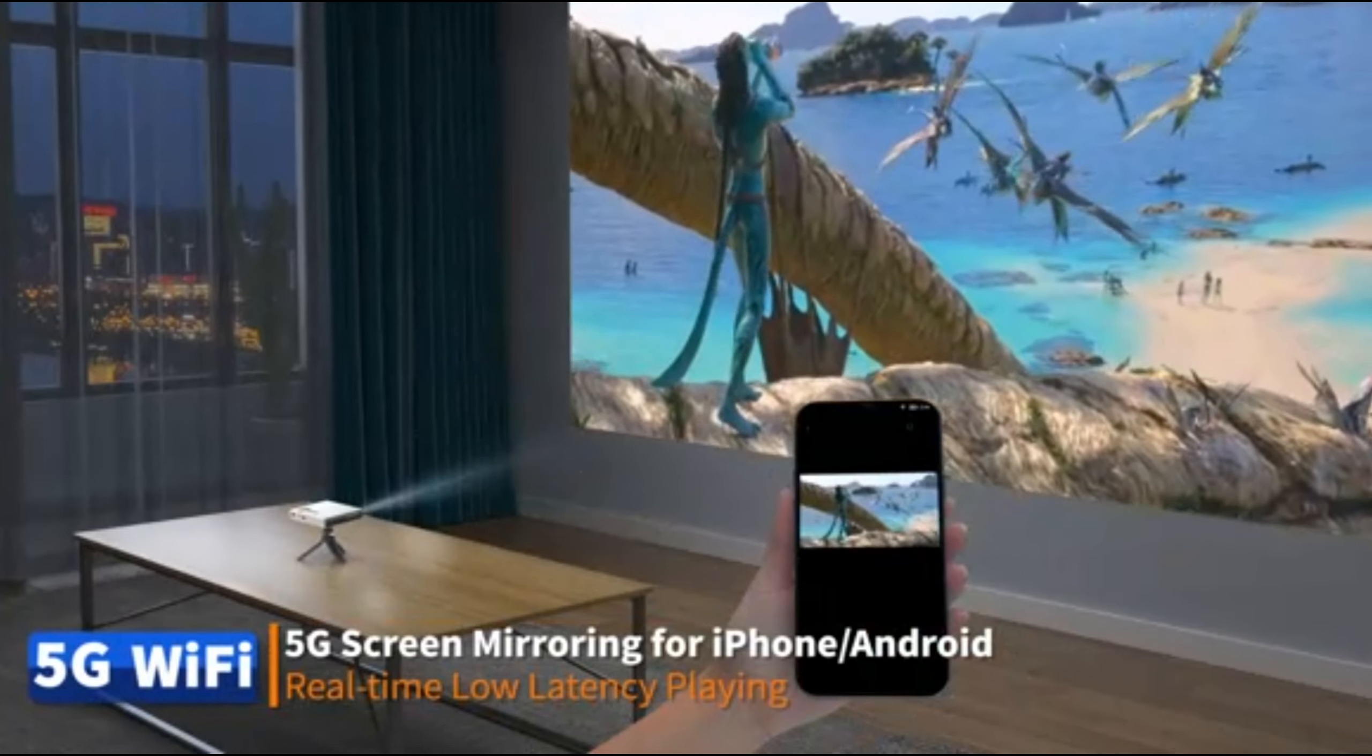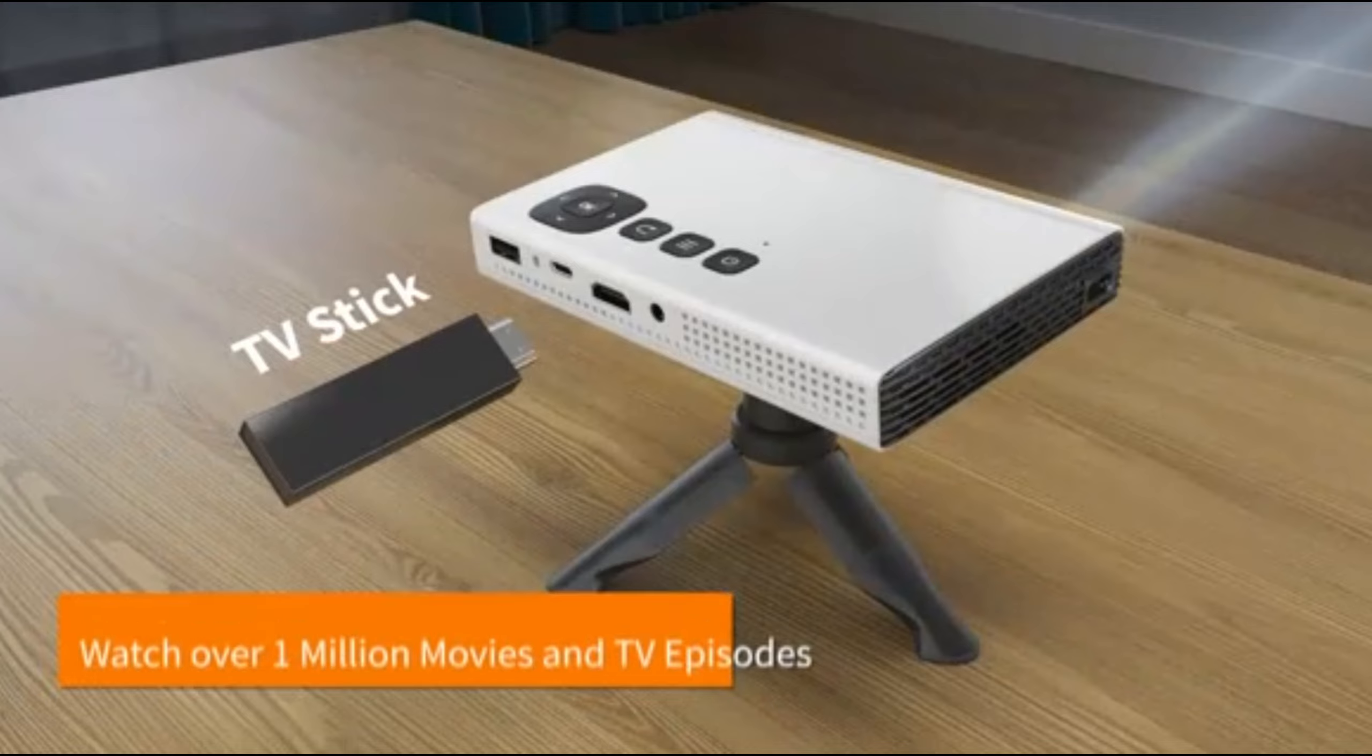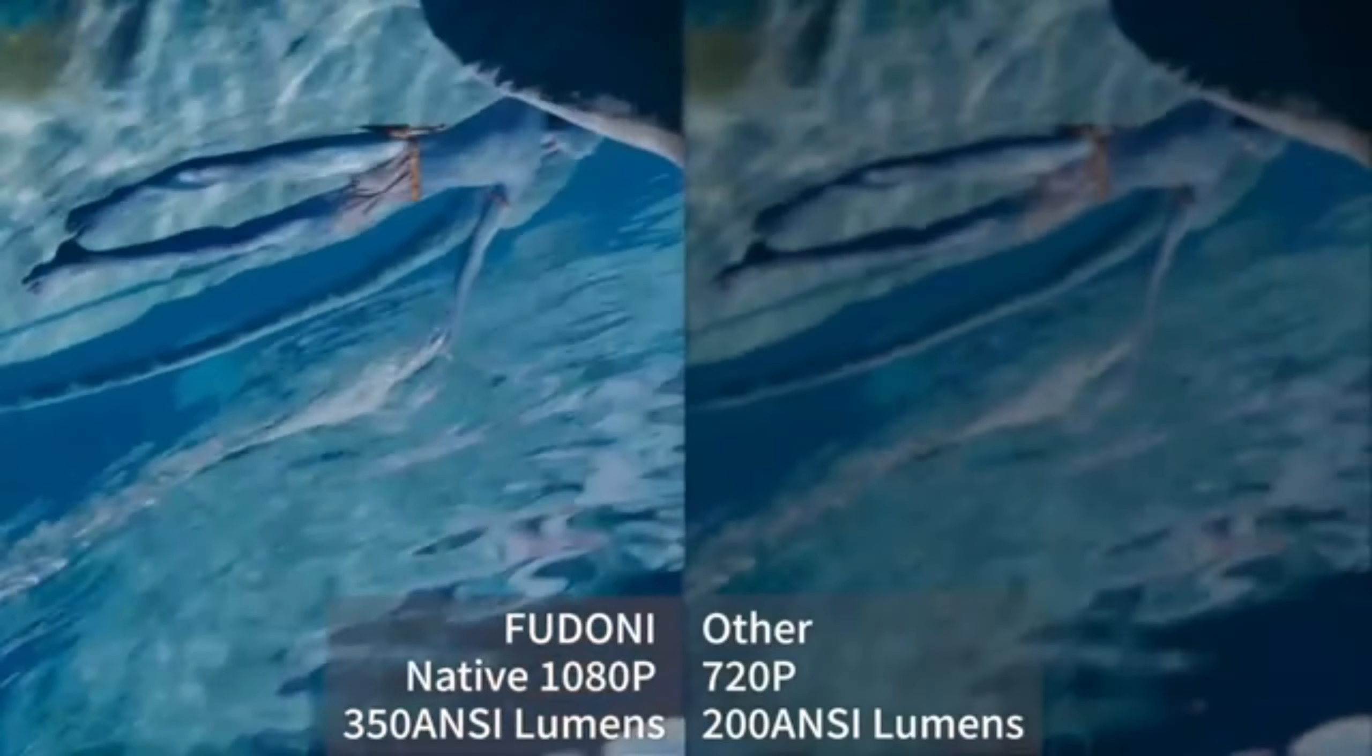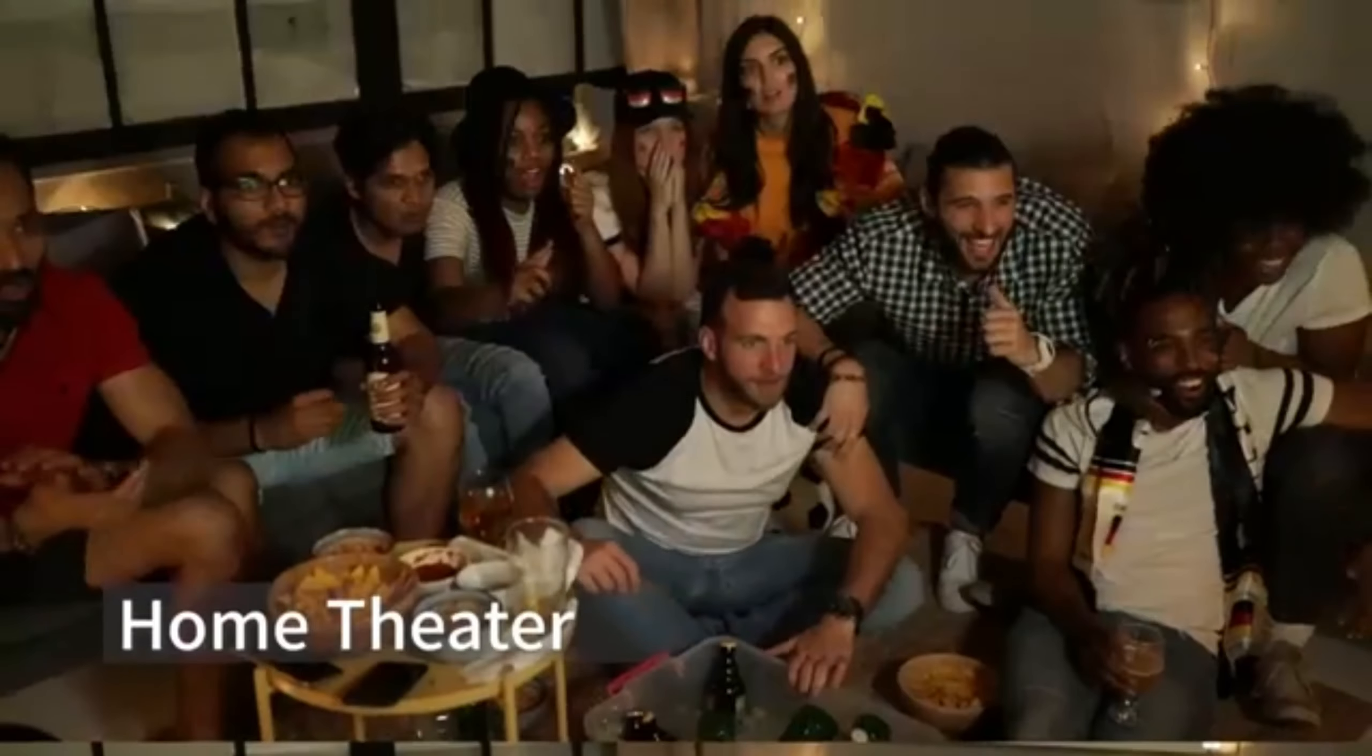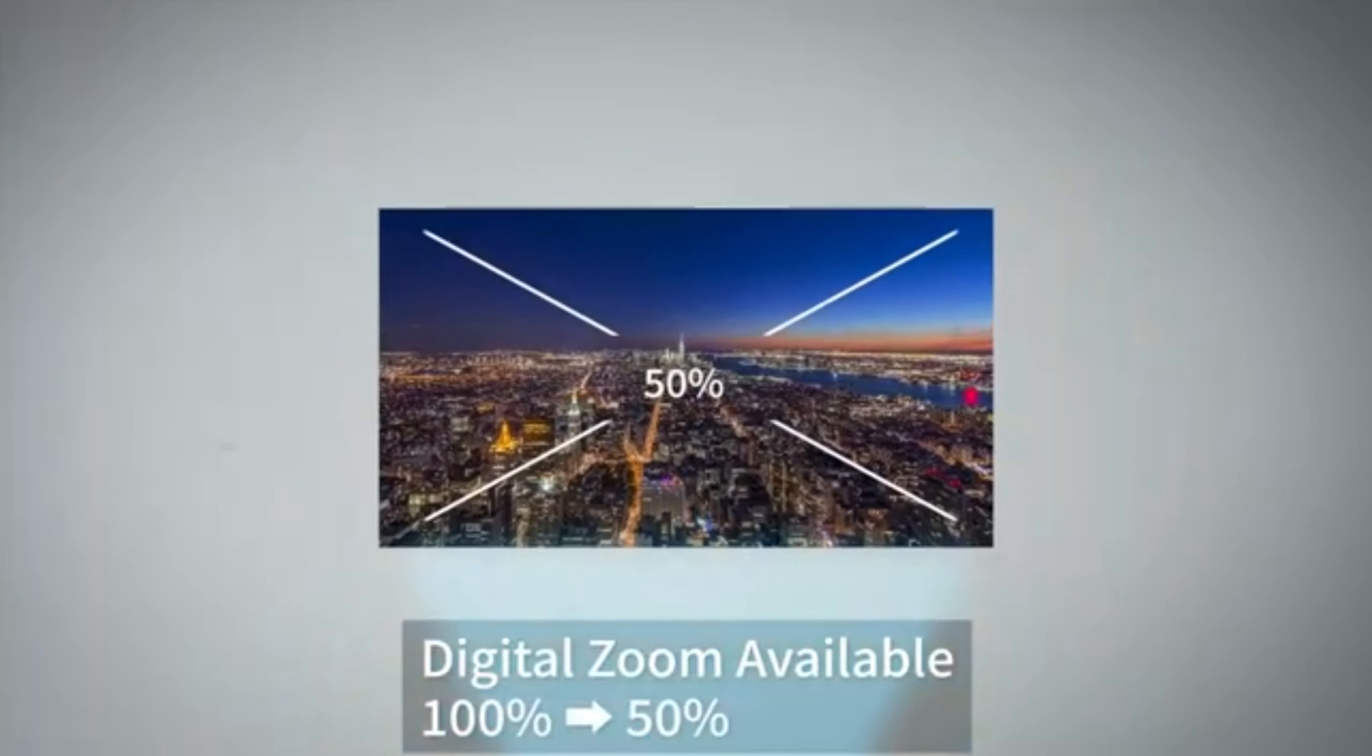Lights, camera, action. Our fourth gadget is the Kodak Luma 150 Ultra Mini Pocket Pico Projector. It's the ultimate portable entertainment solution. With this tiny projector, you can turn any space into a cinema. Perfect for movie nights, business presentations, or just having fun with friends and family.